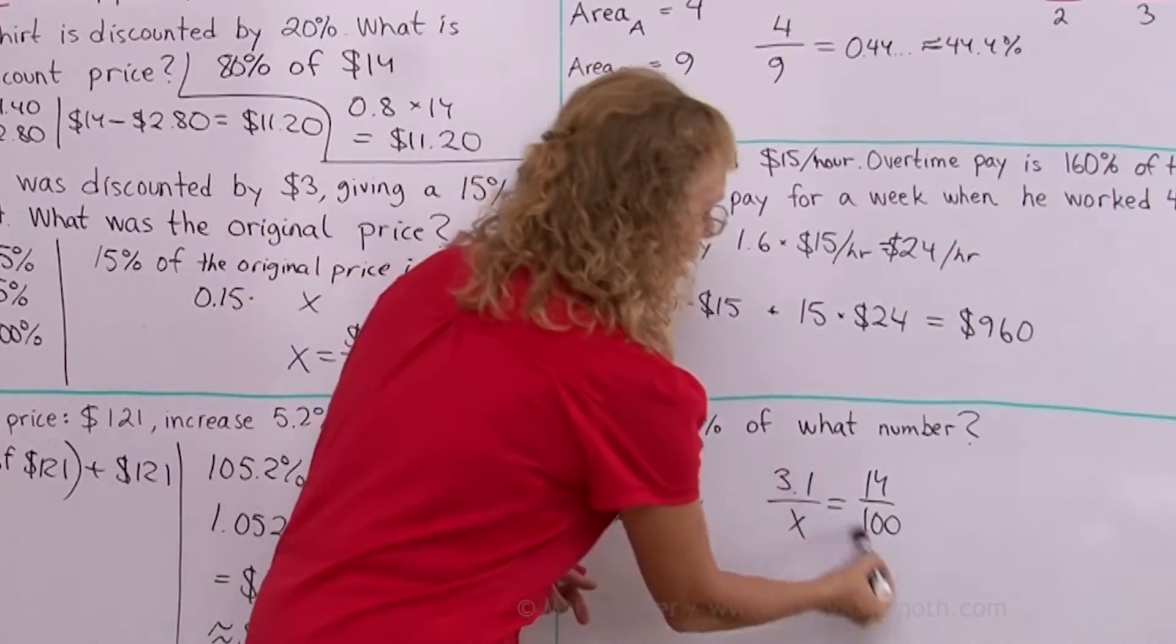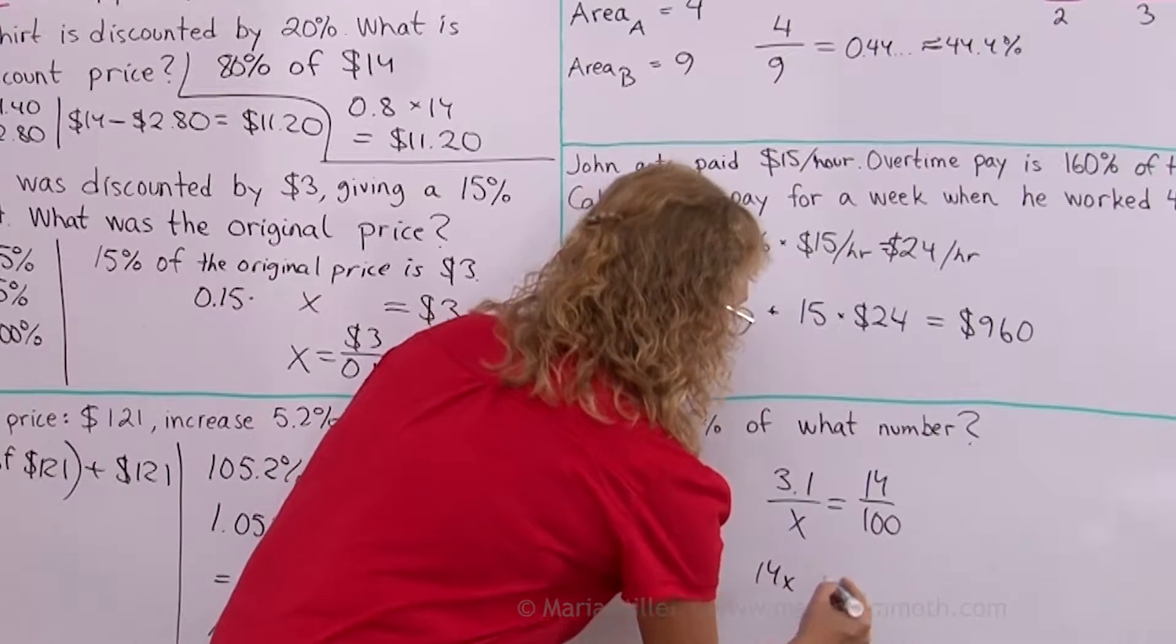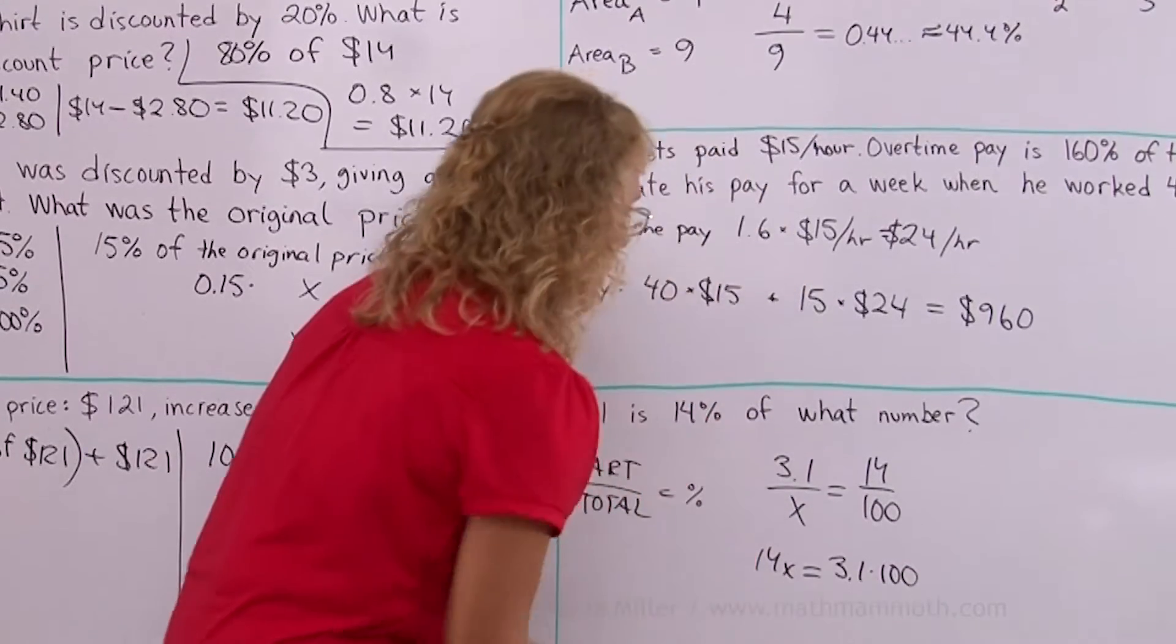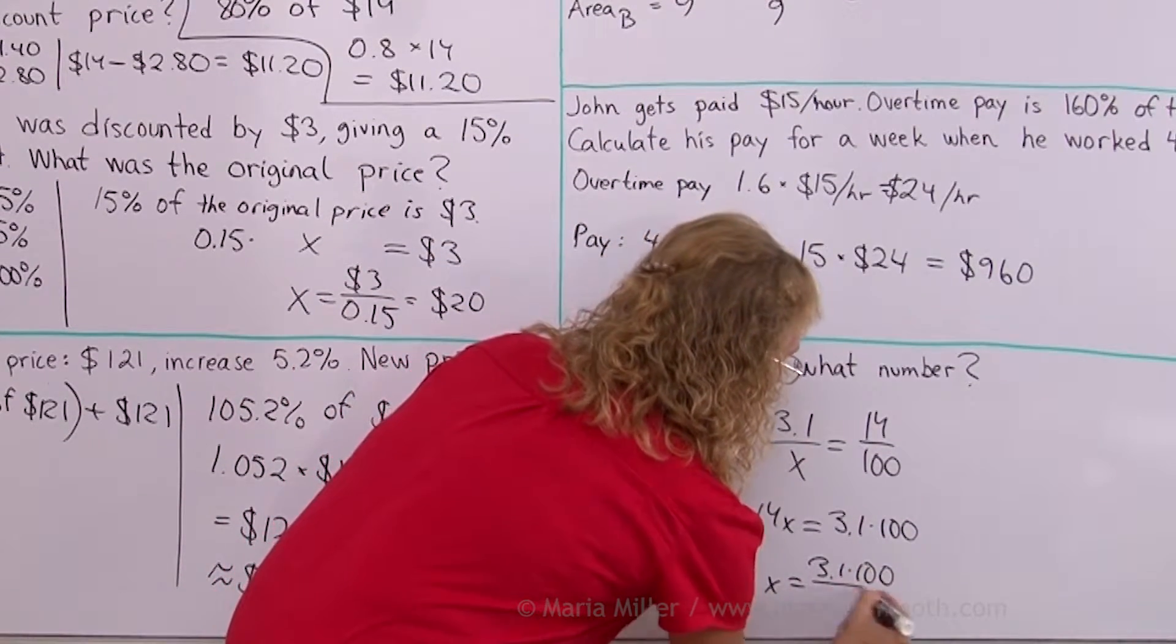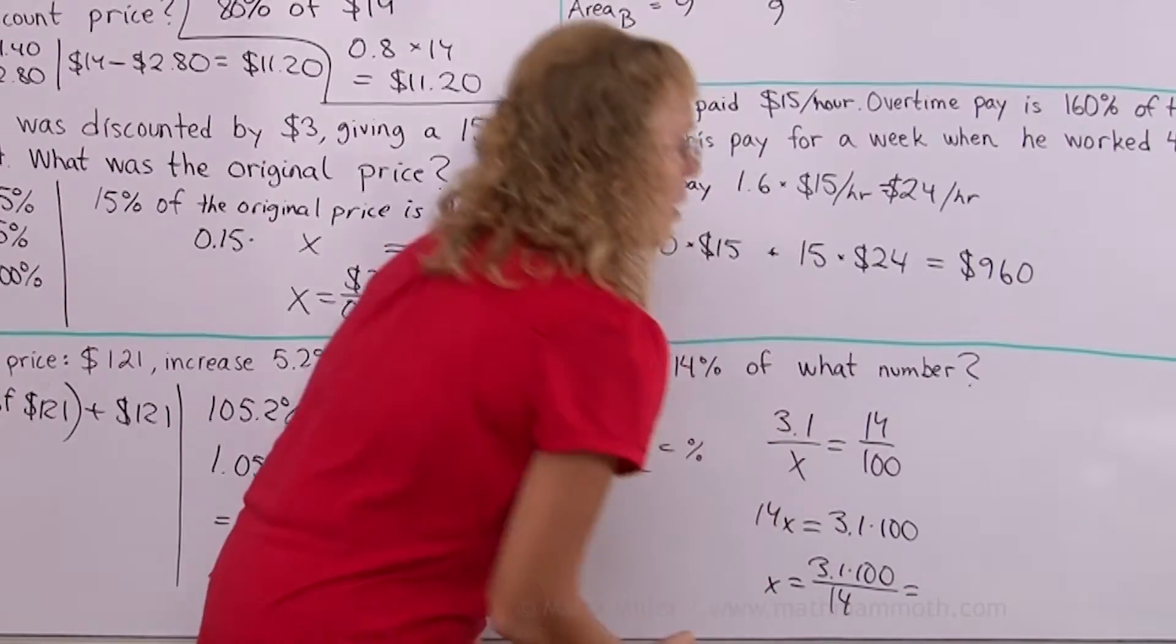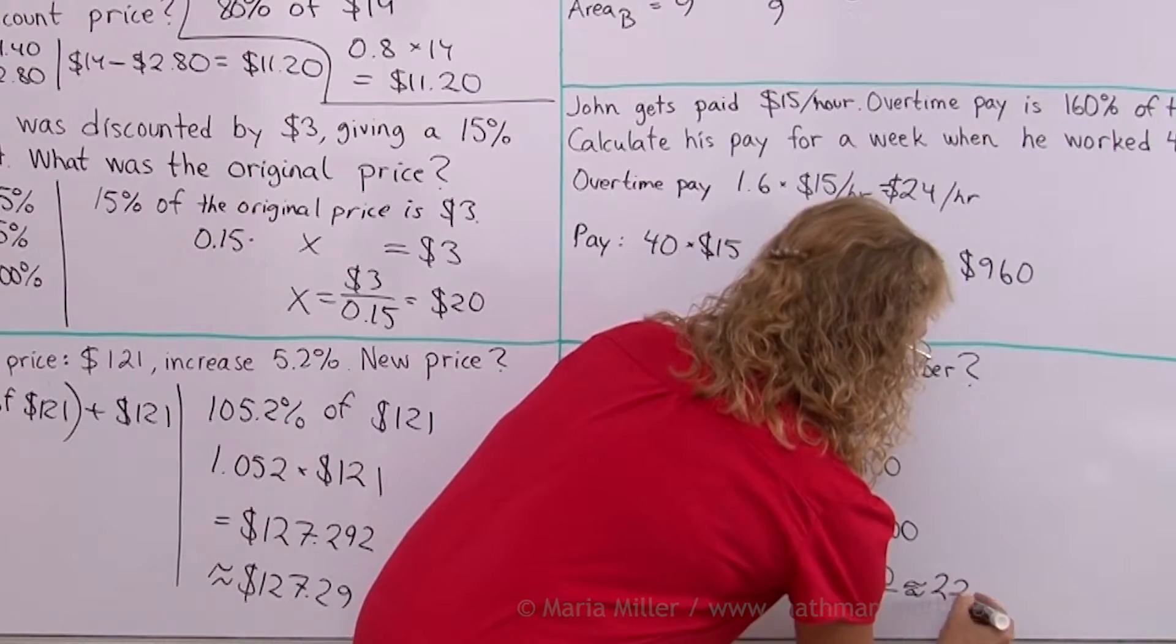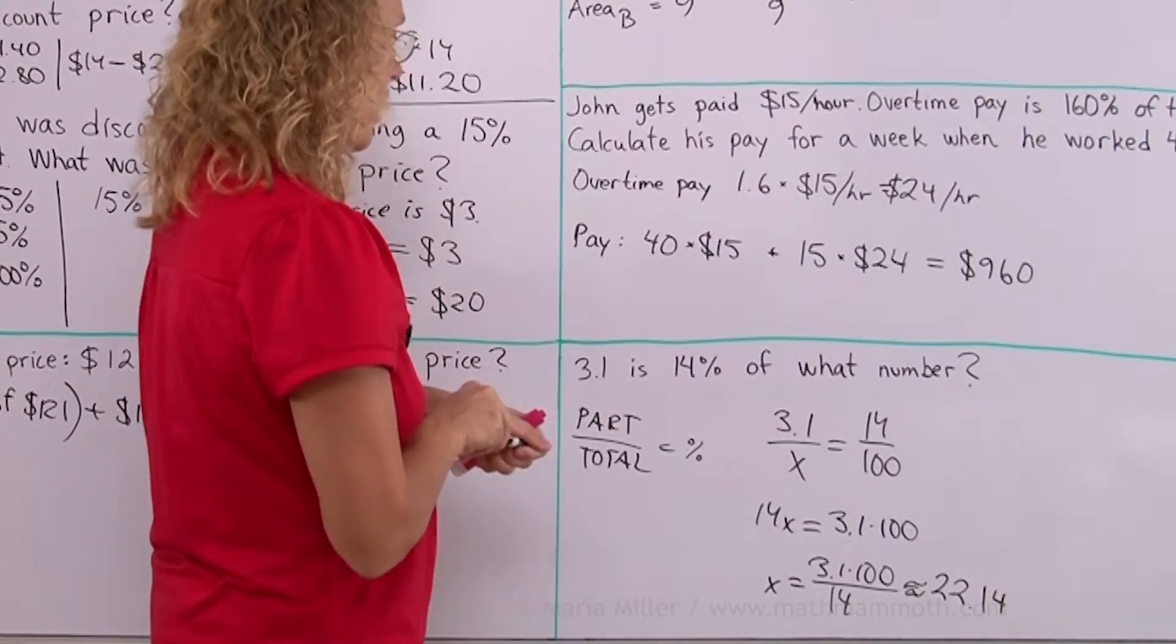Now solve the proportion by cross multiplying. We get 14x equals 3.1 times 100. And then x equals 3.1 times 100 over 14. And that is approximately 22.14. Alright.